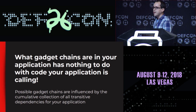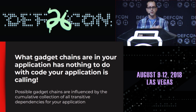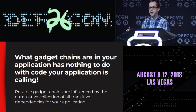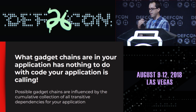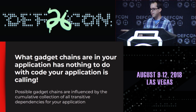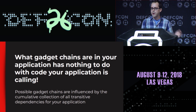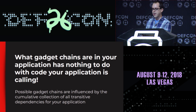The important thing to understand about gadget chains — what makes deserialization vulnerabilities so dangerous — is that what gadget chains can be constructed has nothing to do with what your application actually does. If there are classes on your class path, they can be specified by the serialized payload, and your application can therefore be made to construct them and run whatever magic methods exist in those classes. Your code wouldn't have to have called any of those things — maybe there's no code that even transitively called those methods. But by the mere fact that they exist on your class path, they can potentially be exploited.